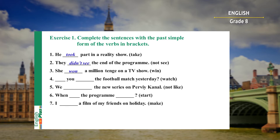Sentence number four is a question. So to make a question, I put 'did' before the subject and use the verb in the first form: Did you watch the football match yesterday? Sentence number five is negative: We didn't like the new series on Channel One. Sentence number six is a question again: When did the program start? Sentence number seven is positive; 'make' is an irregular verb, so I put it into the second form: I made a film of my friends on holiday.